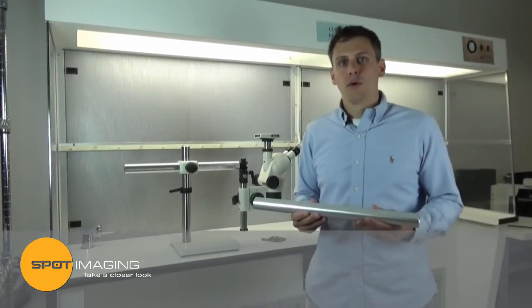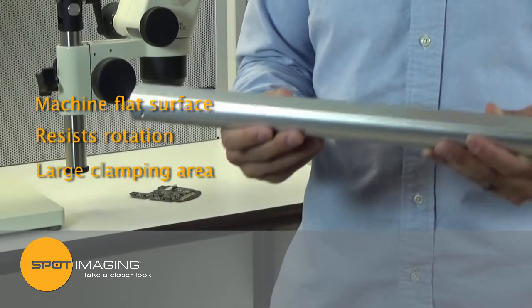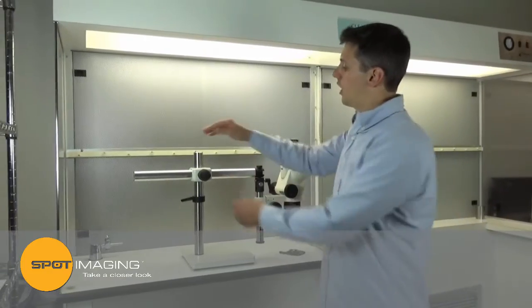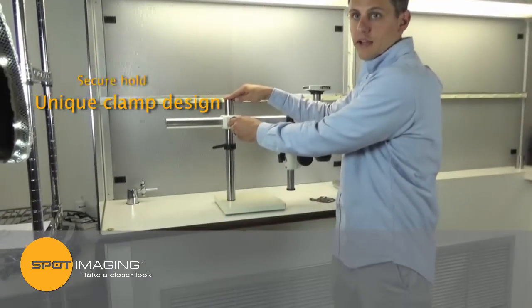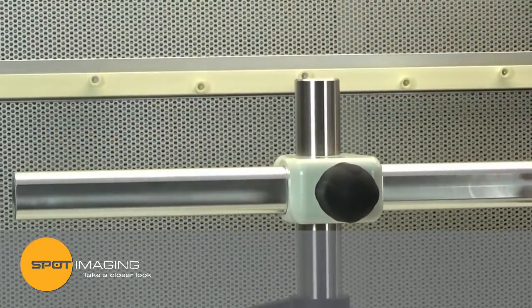Our horizontal pole has a machined flat surface to resist rotation and provide a large clamping area. Our unique clamp design provides a secure hold without scratching or marring to ensure a lifetime of use.